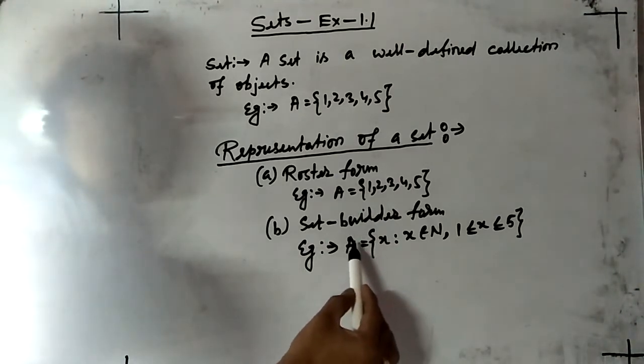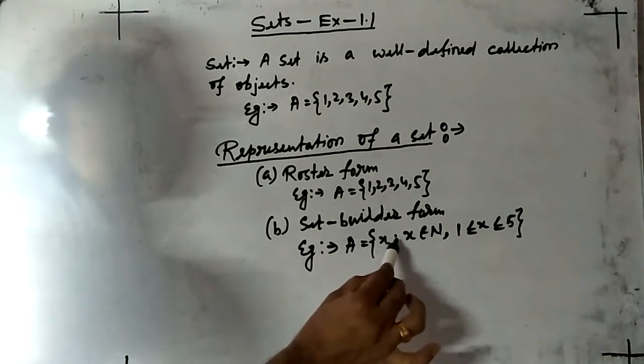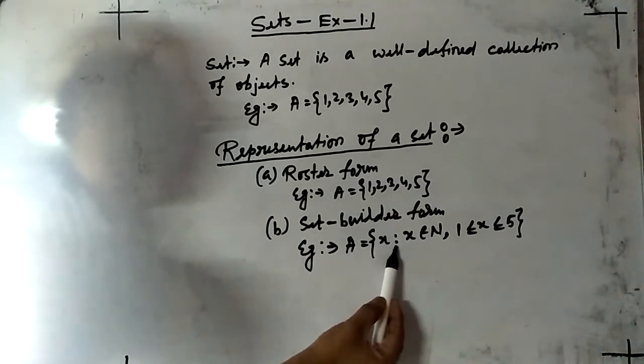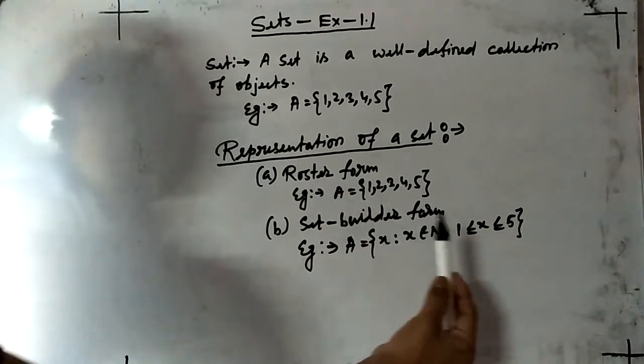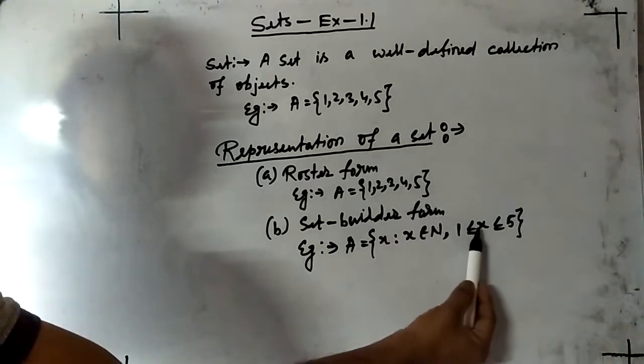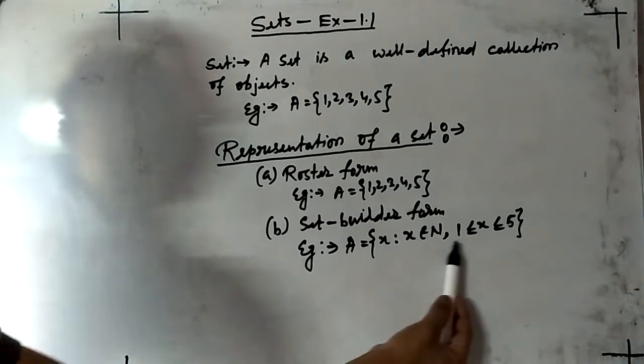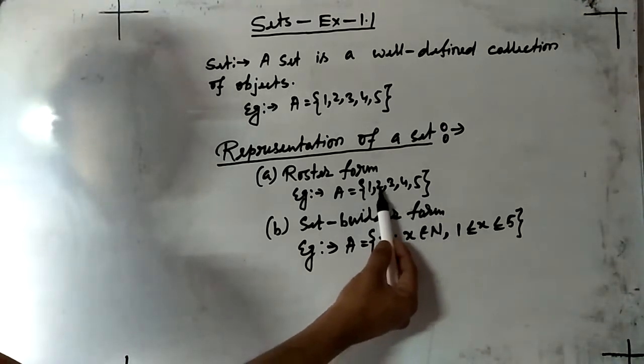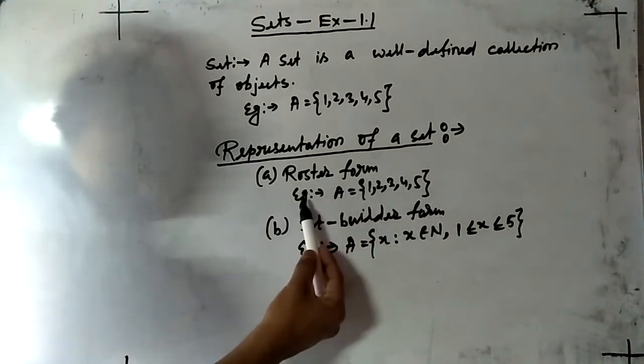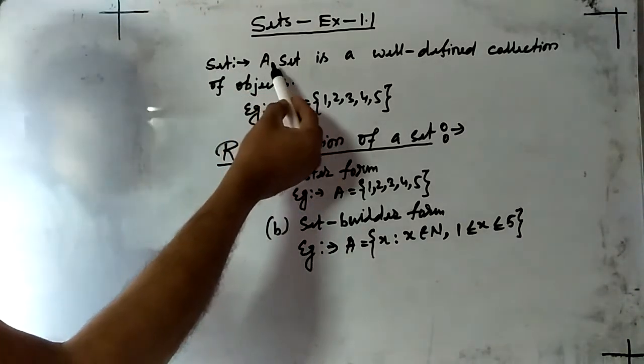Set builder form defines the type of object we can collect. The same set can be written in set builder form: A equals to x, x is a variable, such that x belongs to natural number. Natural numbers, but here 1 to 5, so we will write 1 less than or equal to x less than or equal to 5. When we are defining a set using characteristics, that is set builder form.